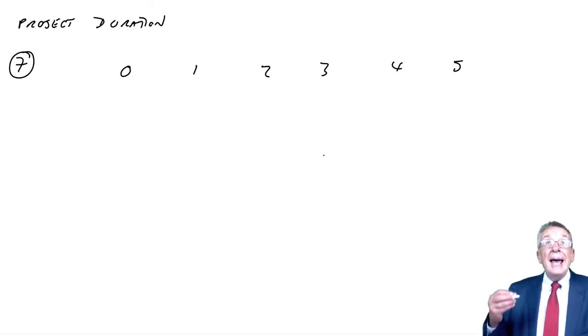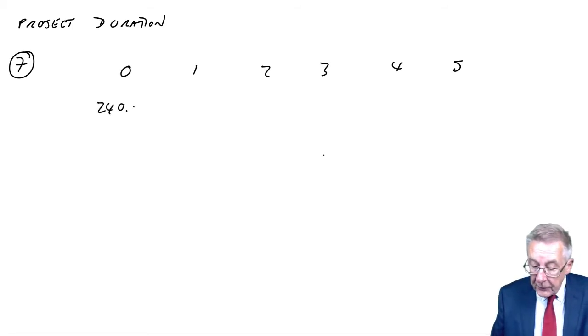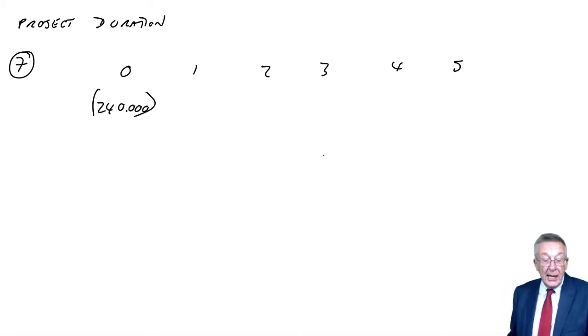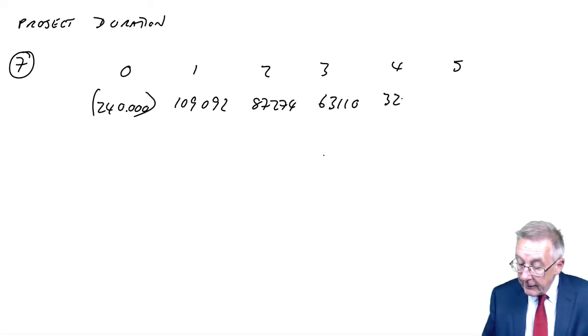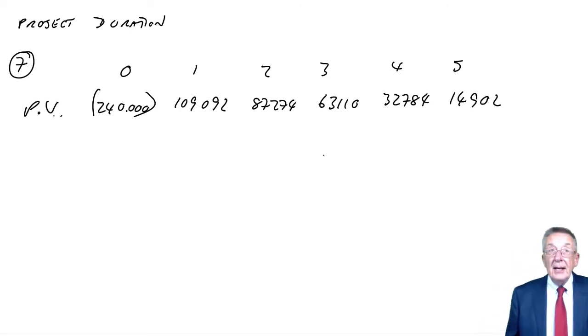These are the flows after having discounted at 10%. The present values: £240,000, £109,092, at time two £87,274, £63,110, £32,784, £14,902. And I repeat, these have already been discounted at the cost of capital of 10%. If you were given or if you had calculated the original cash flows each year, you would then have had to discount to get those values.